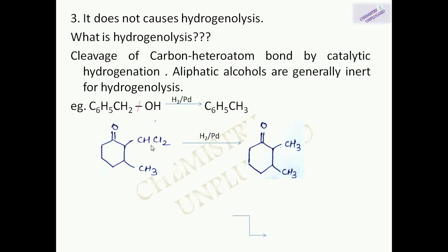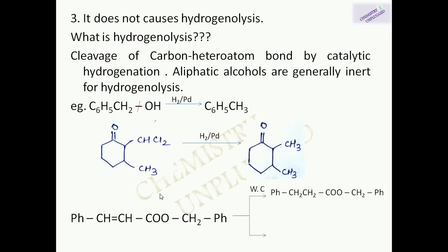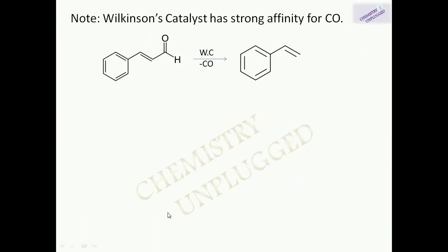In contrast, when using Wilkinson's catalyst first, it will not break the carbon–oxygen bond and will only reduce the double bond. Then if H₂/Pd is used, it will break that bond and also reduce the double bond. However, if we have a CHO group along with a double bond, Wilkinson's catalyst will perform decarbonylation in preference to hydrogenation, because it has a strong affinity for carbon monoxide.